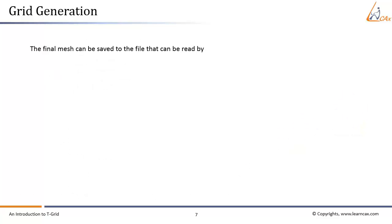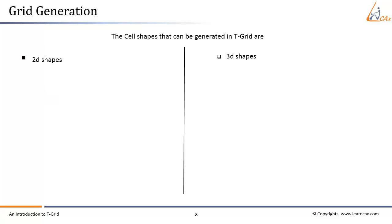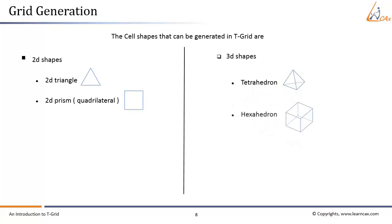Finally, the final mesh can be saved to a file that can be read by HyperMesh, Nastran, Patran, and Ansys. Both two-dimensional and three-dimensional cell shapes can be generated in T-Grid. 2D cell shapes are 2D triangle, 2D prism, or quadrilateral. 3D cell shapes are tetrahedron, hexahedron, pyramid, or prism.